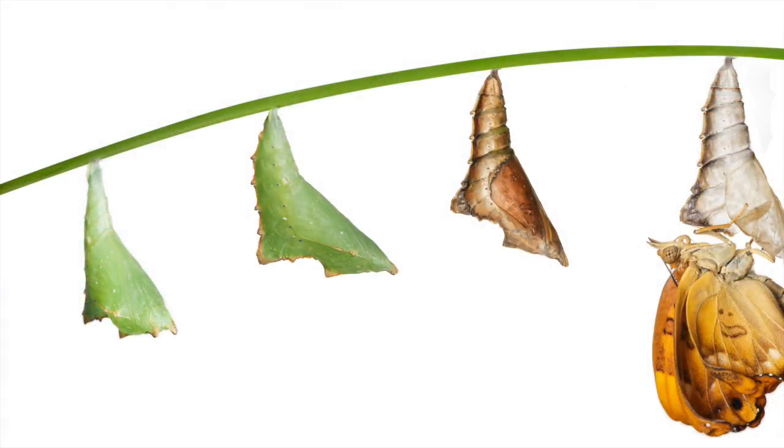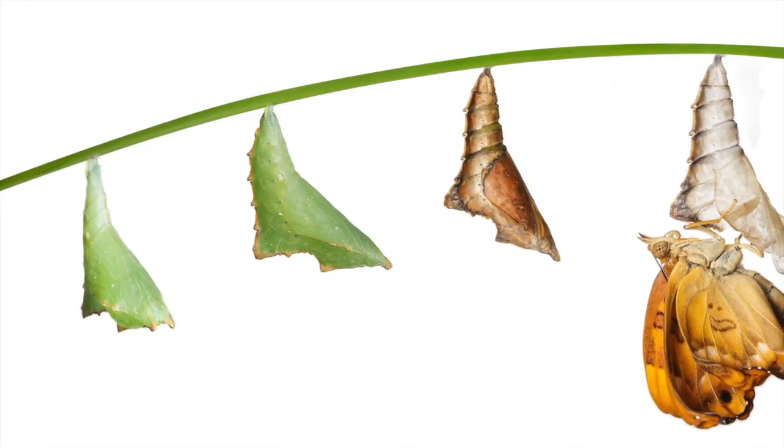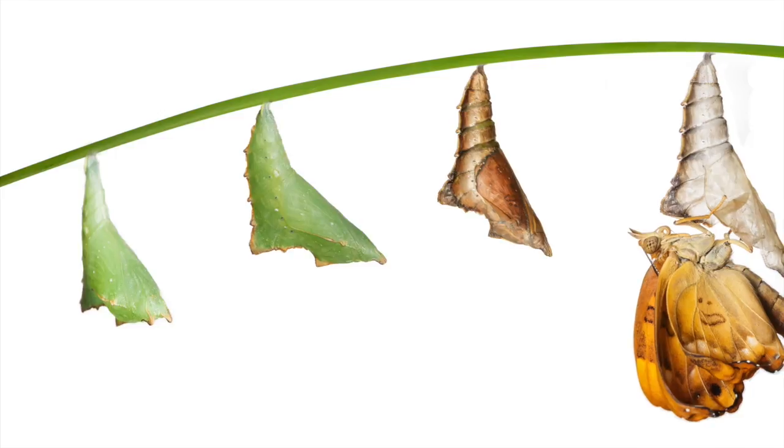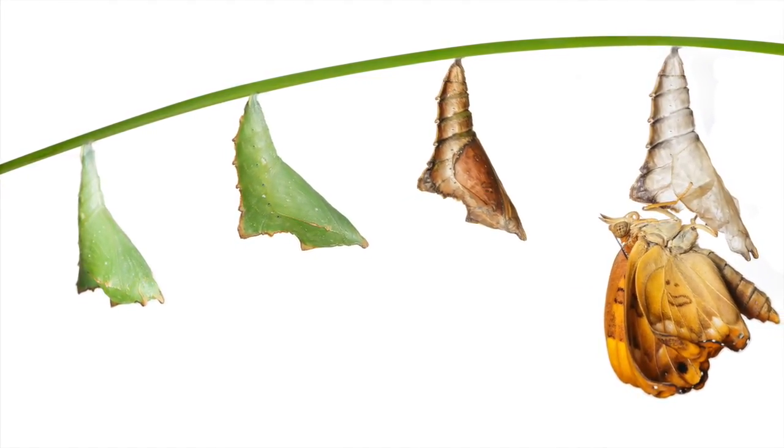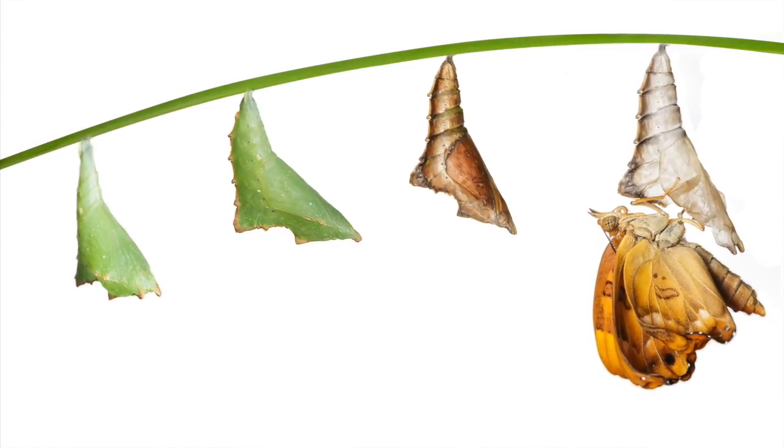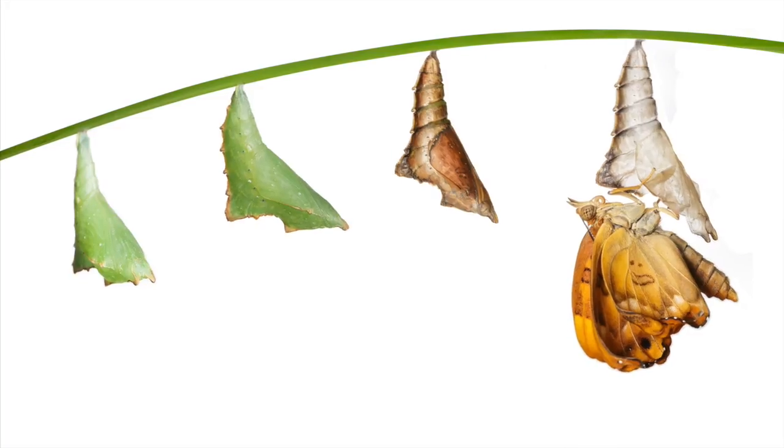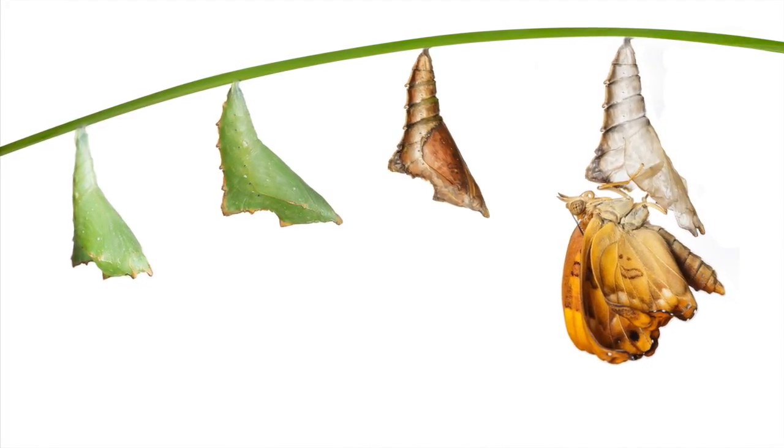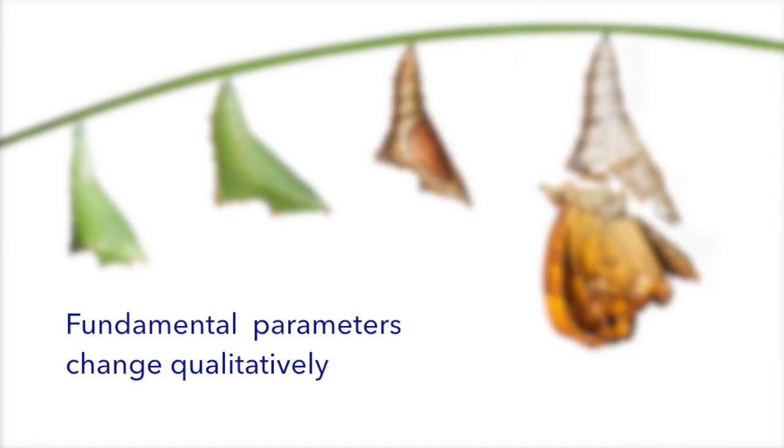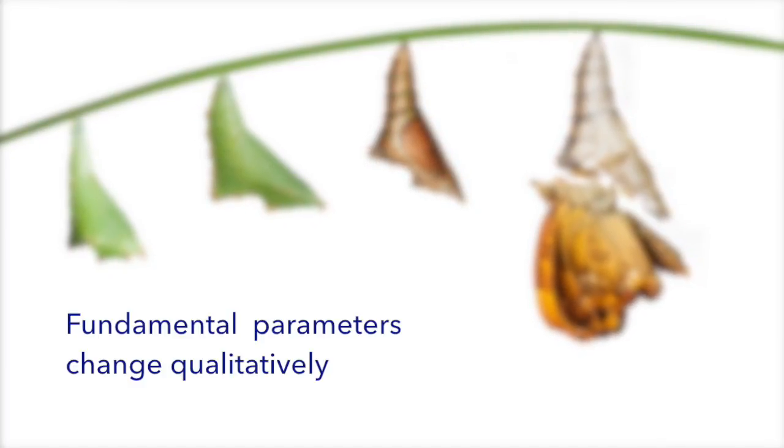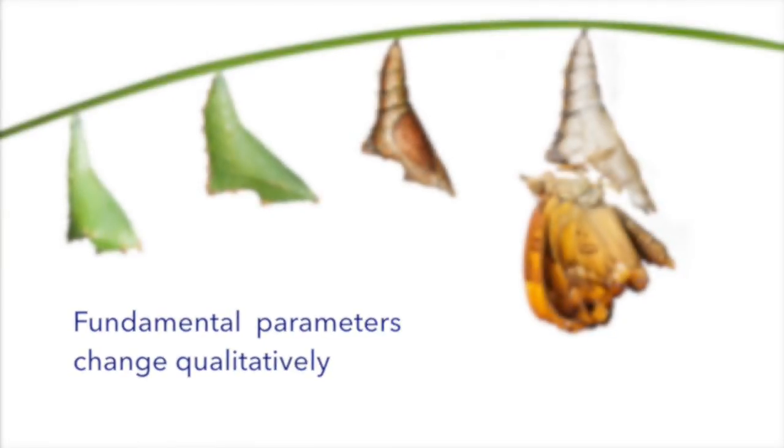Again, there are lots of examples of this, such as the phase transition between solid and liquid that a substance goes through when heated, but maybe the most dramatic example is the metamorphosis of a butterfly, from being a caterpillar to a mature adult. Not only does the system's morphology change, but the whole set of parameters that we define it with are so drastically altered prior and post the phase transition that we give the creature a whole new name.